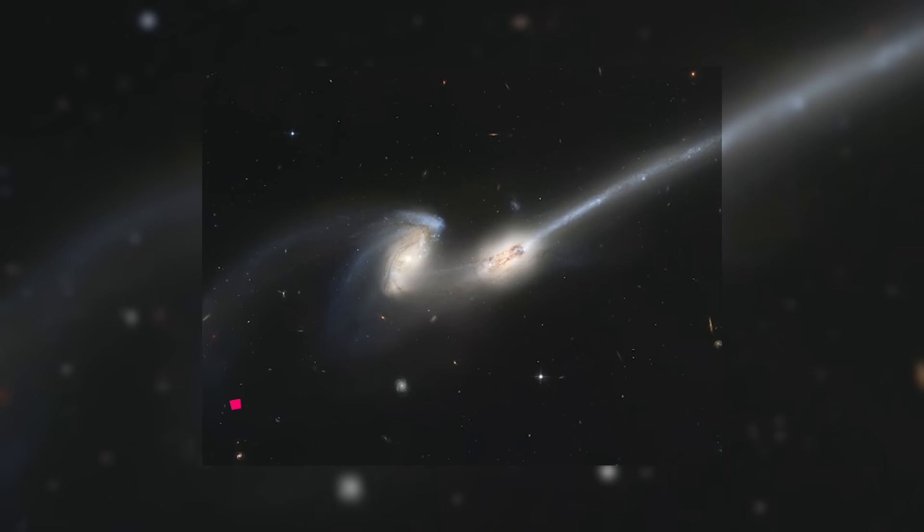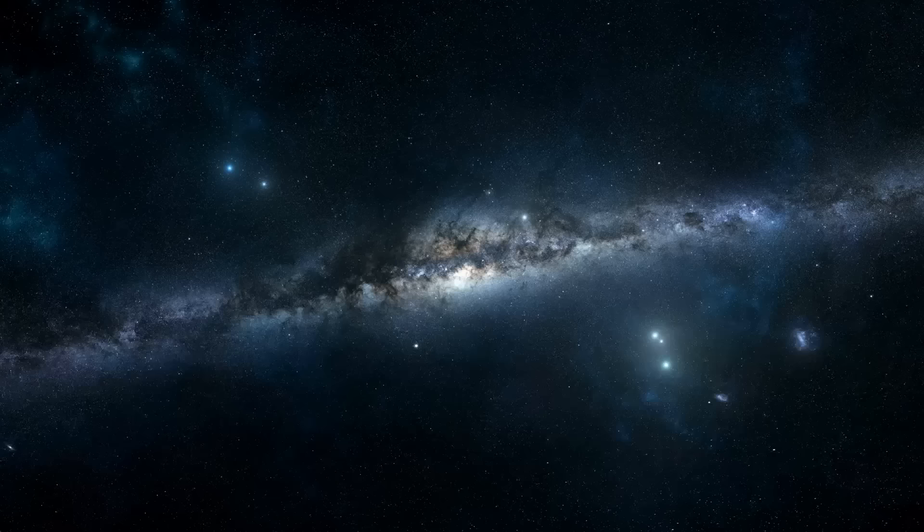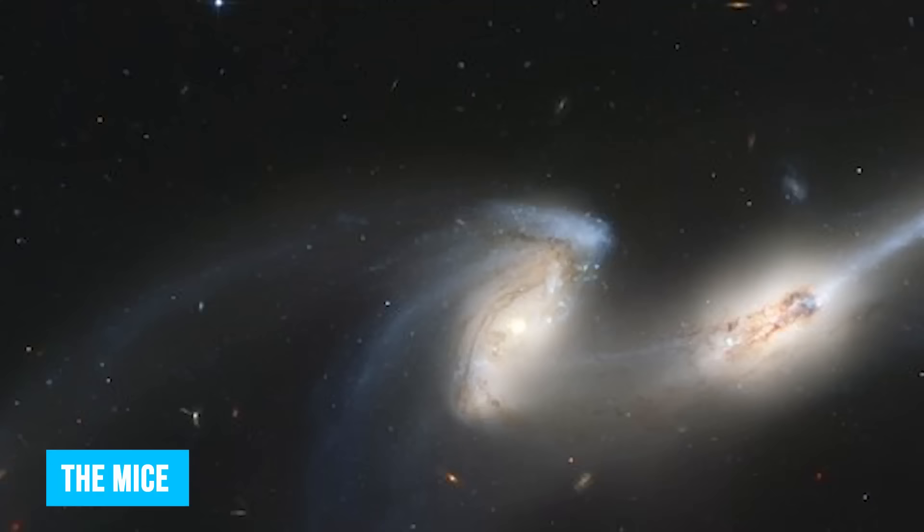Number 6. The Merging Galaxies. Located 300 million light-years away in the constellation Coma Berenices, the colliding galaxies have been nicknamed the mice, because of the long tails of stars and gas emanating from each galaxy.